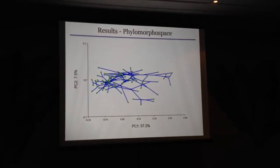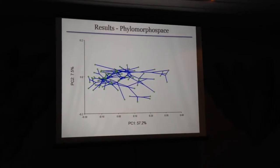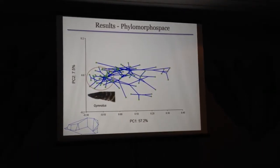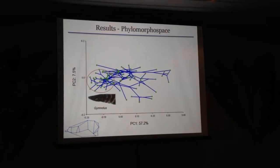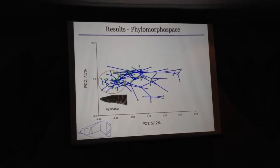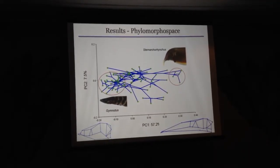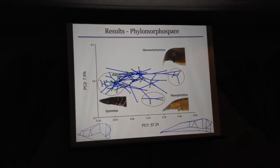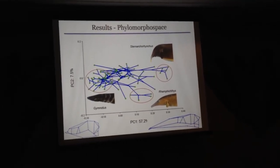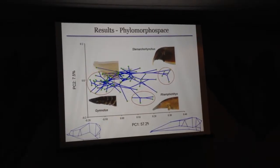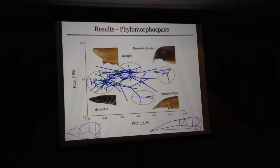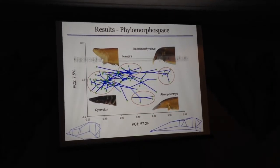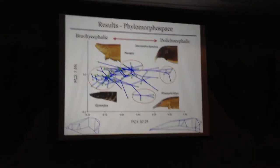Here are the results of the phylomorphospace analysis. The main axis of variation accounts for over half of all variance and is, as expected, variation along the brachycephalic to dolichocephalic axis. Here is the genus Gymnotus with a relatively foreshortened skull — there's quite a bit of diversity within the genus. This is Sternarchorhynchus with an elongate skull, showing the dolichocephalic skull shape. There are other independent evolutions of elongate snouts in a different clade and different family, with relatively low PC2 values. And these are the deep-channel species. The main axis of variance is that brachycephalic to dolichocephalic axis — we need a shorthand for that, which is coming in a moment.